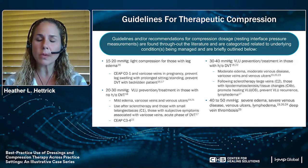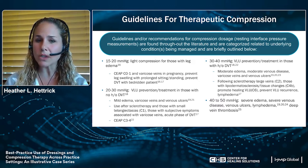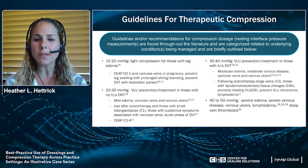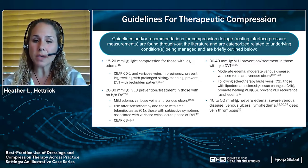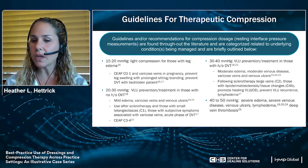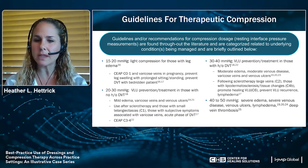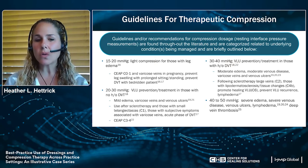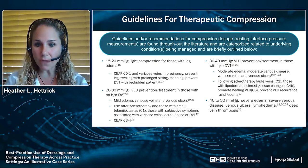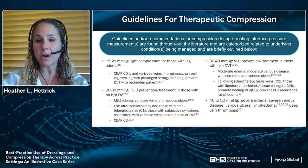For example, 15 to 20 mmHg is considered very light compression for those with early leg edema or C1 and C2 venous disease, all the way up to 40 to 50 mmHg, which is indicated for patients with severe edema, severe venous disease, the presence of venous ulcers, and even lymphedema or DVT. It's important to understand the clinical presentation of your patient and then match the compression profile to best achieve your goals and outcomes.